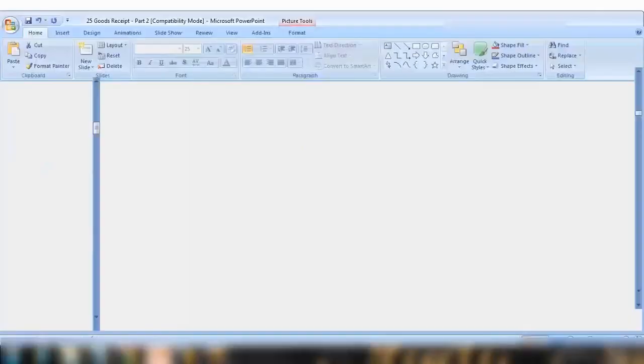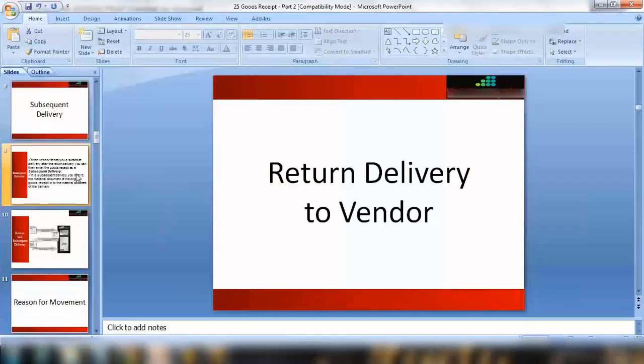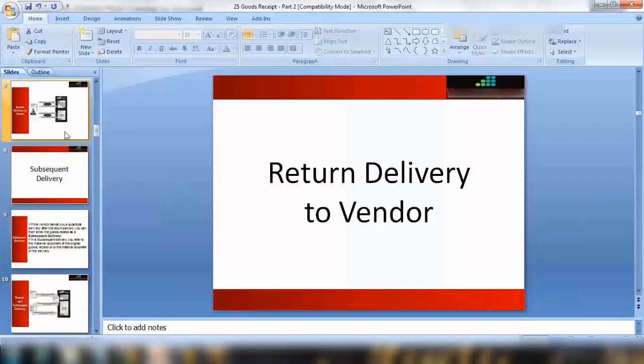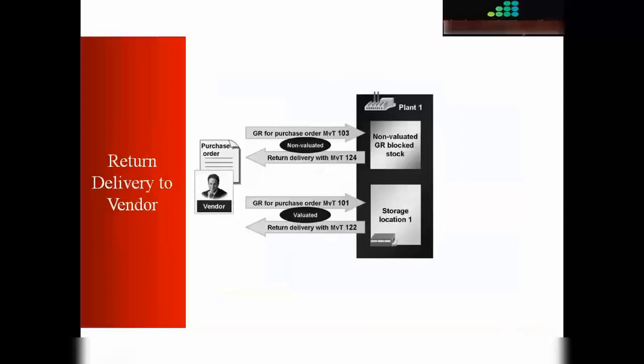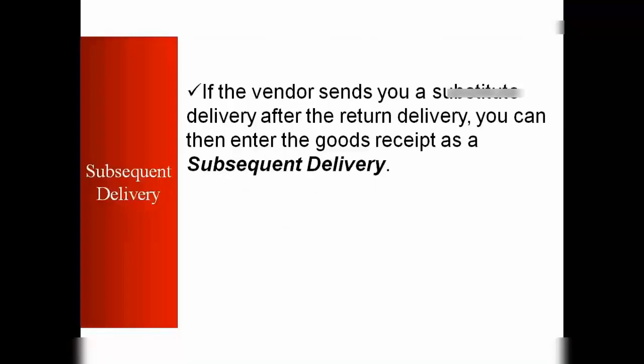That's your return delivery. After the return delivery, the second step may be a subsequent delivery. If the vendor sends you a substitute delivery after the return delivery, you can then enter the goods receipt as a subsequent delivery. That means we sent the damaged product back and the vendor will send us the correct material with the proper quality — that will be done by subsequent delivery.